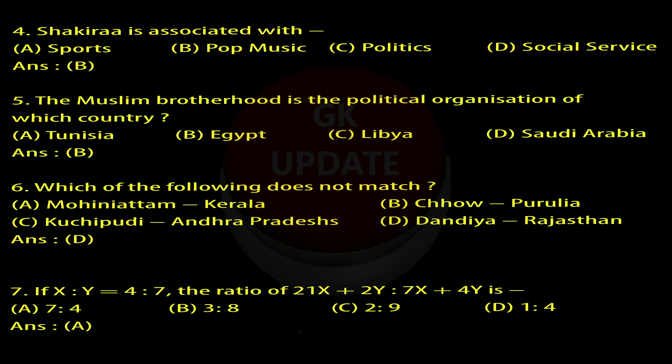Question 7: If X/Y = 4/7, the ratio of (2X - Y) / (7X - 4Y) is: A. 7/4, B. 3/8, C. 2/9, D. 1/4. Answer: A.